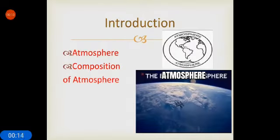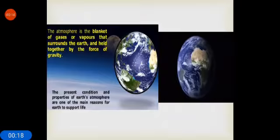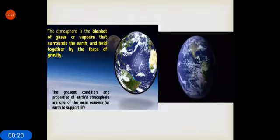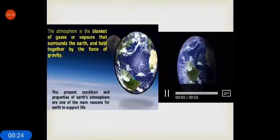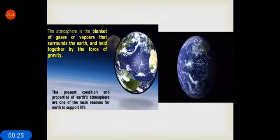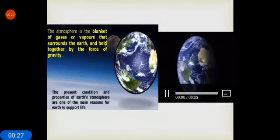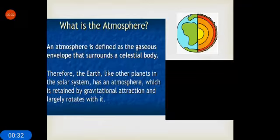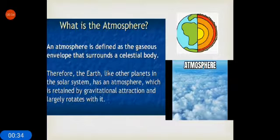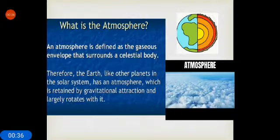In this module, we will study what is atmosphere and composition of atmosphere. What is atmosphere? The atmosphere is a blanket of gases or vapors that surrounds the earth and held together by the force of gravity. The present condition and properties of earth's atmosphere are one of the main reasons for earth to support life. You can also say an atmosphere is defined as the gaseous envelope that surrounds a celestial body.